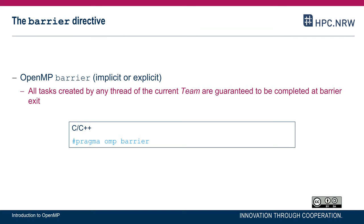With respect to tasking, all tasks that have been generated before the barrier have to be completed before any thread is allowed to continue after the barrier. Threads that reach the barrier will start looking for any tasks not yet in execution — for example, tasks still in the task queue — and bring them to execution.